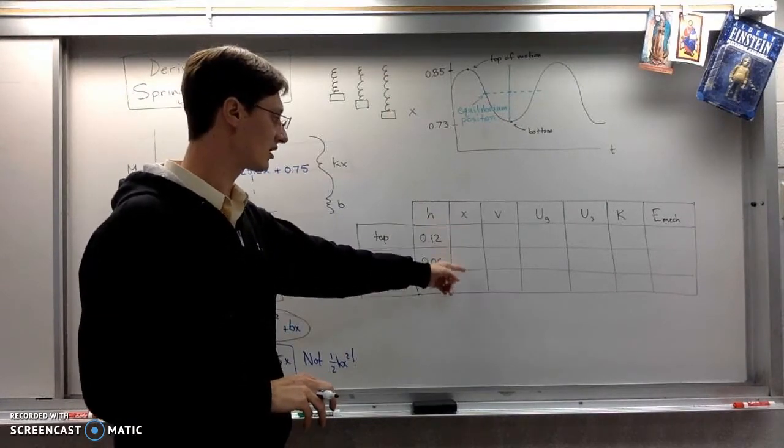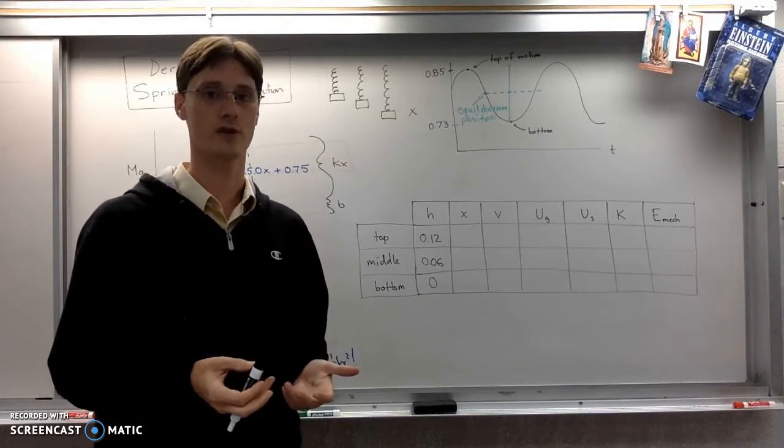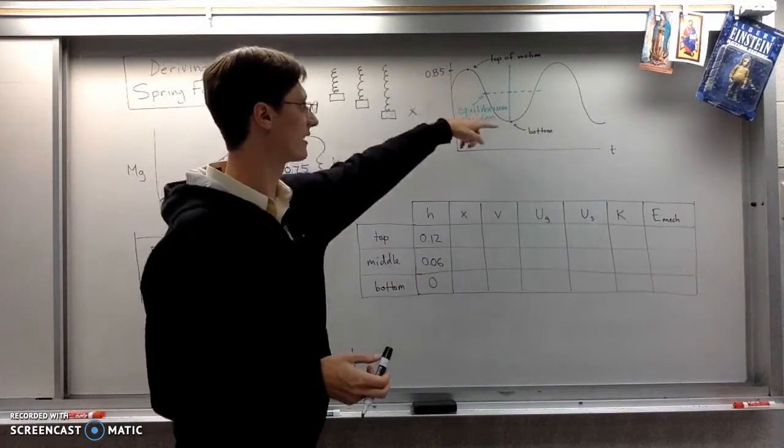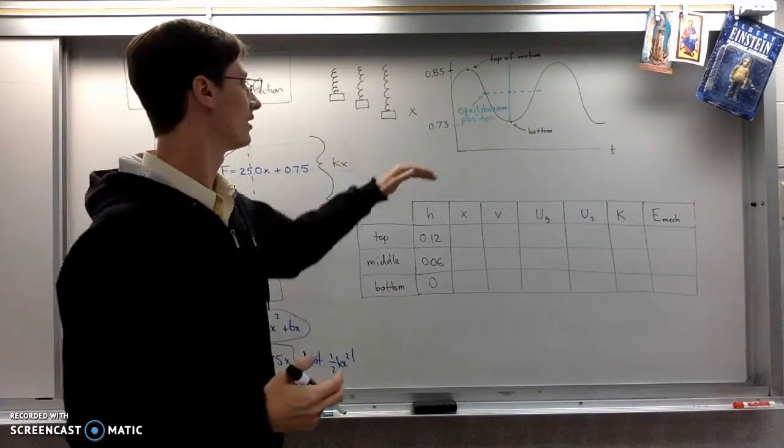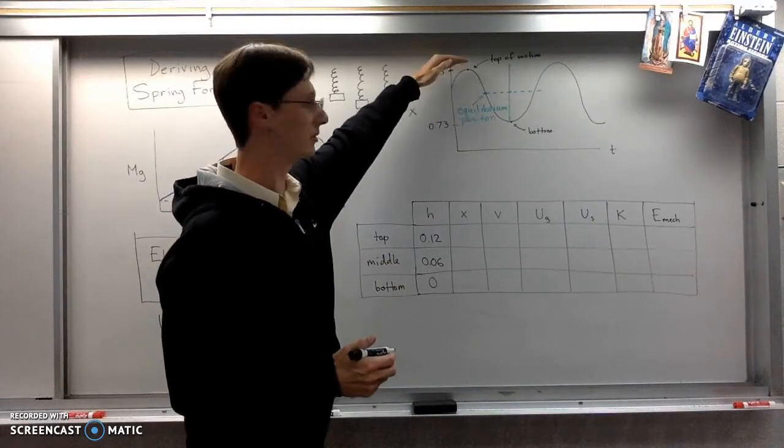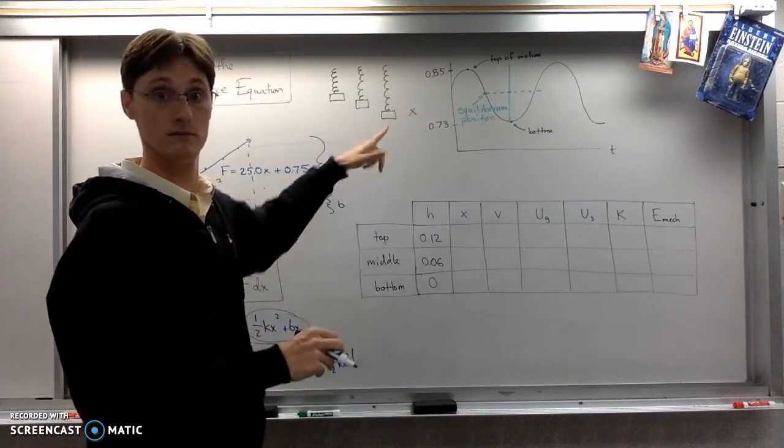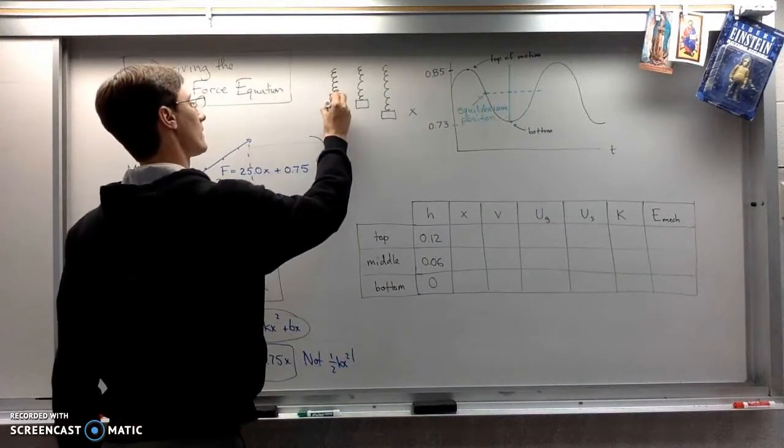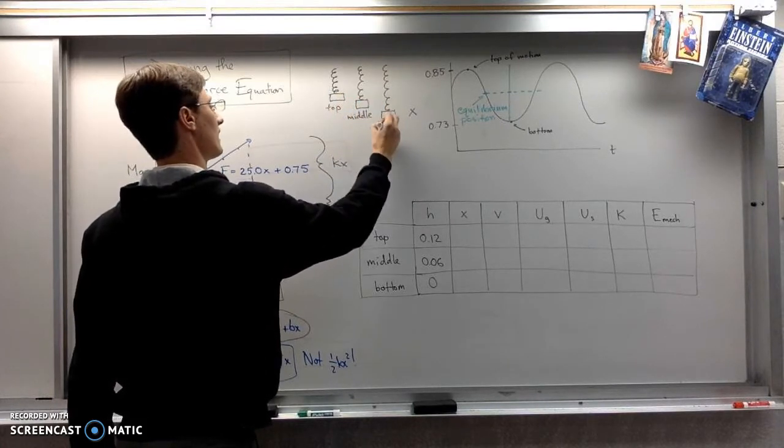All right, getting the extensions though is a little bit more involved. The reason it's more involved is there's nothing about this right here that tells you what the extension of the spring was. You know that at the top it was the least extended and then at the bottom it was most extended, but that doesn't really tell you what the equilibrium extension is.